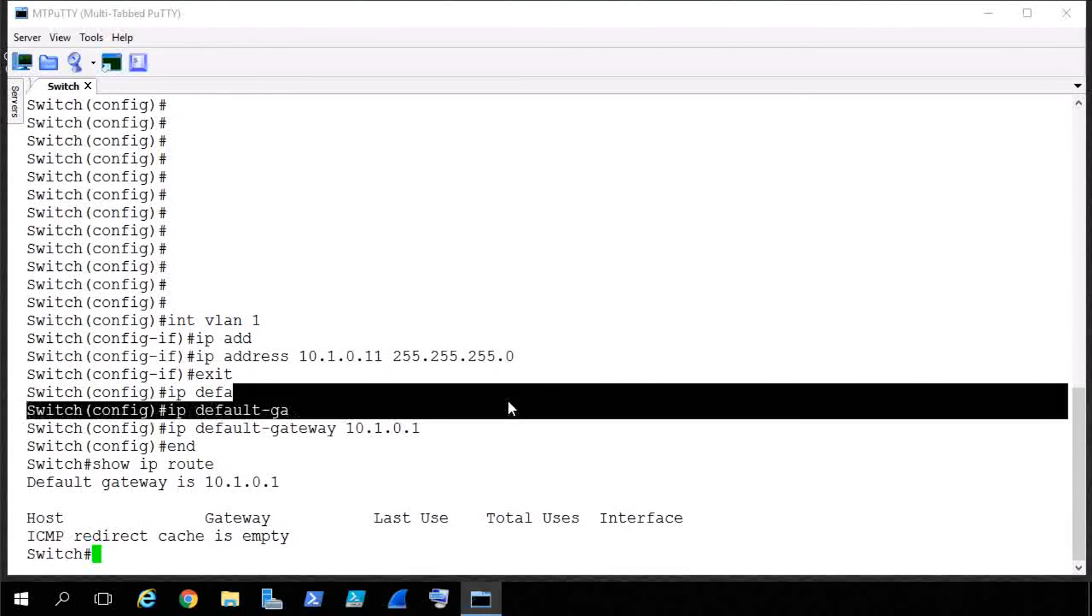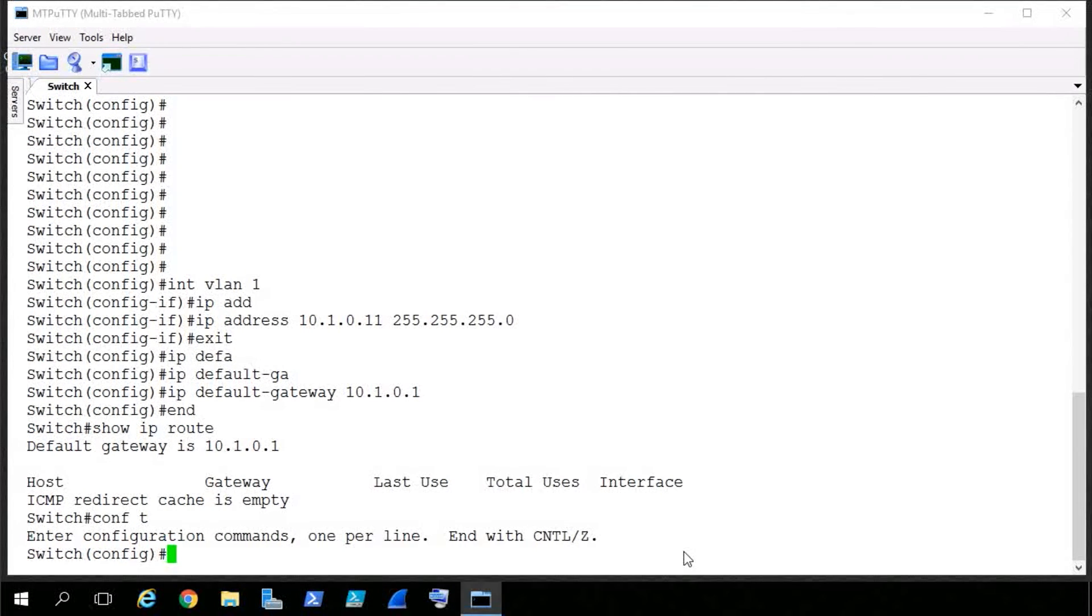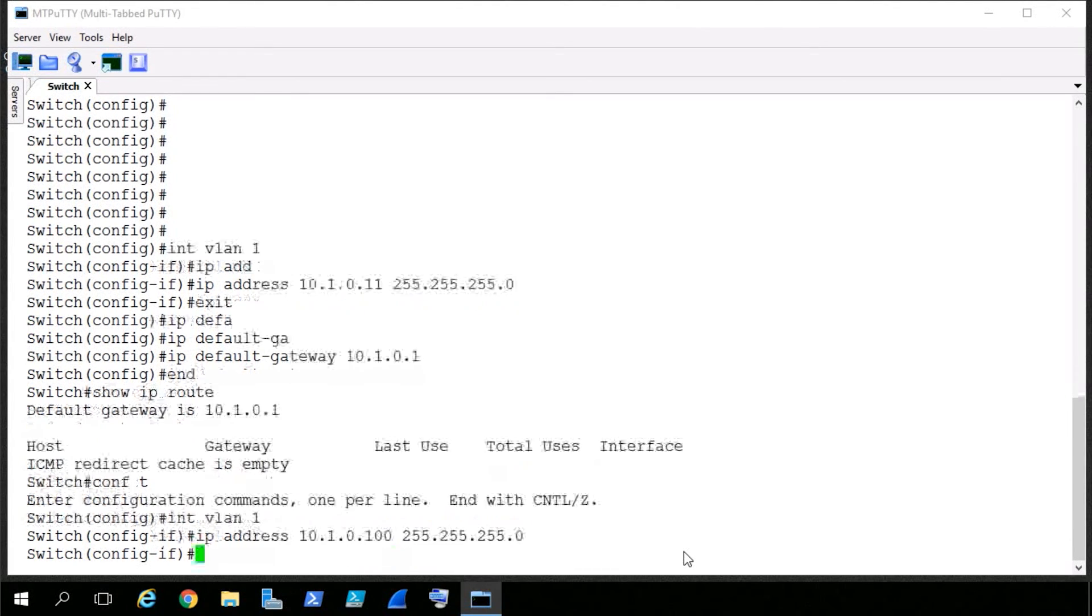So let me go ahead and correct that. Back into configuration mode. Back into interface VLAN1. I'll use the up arrow key a few times. And I'll simply swap out that .11 with .100 and press enter.